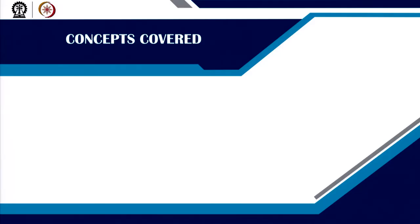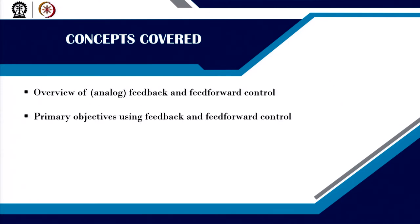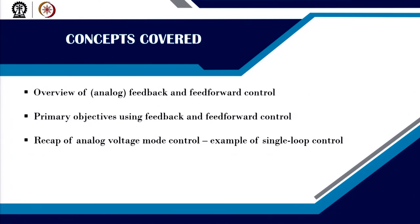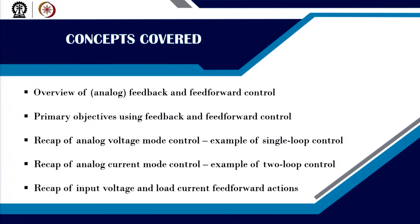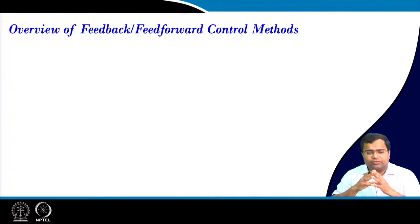Welcome. In this lecture, we are going to recapitulate some feedback and feed forward control methods in switch mode power converters. We first want to recapitulate our analog feedback and feed forward control and summarize what are the primary objectives using feedback and feed forward control. Then we will also talk about analog voltage mode control, which is an example of single loop feedback control. Then we want to recap analog current mode control, which is a good example of two loop control. And then we want to recap input voltage and load current feed forward actions. So in this lecture we want to have an overview of feedback and feed forward control methods.